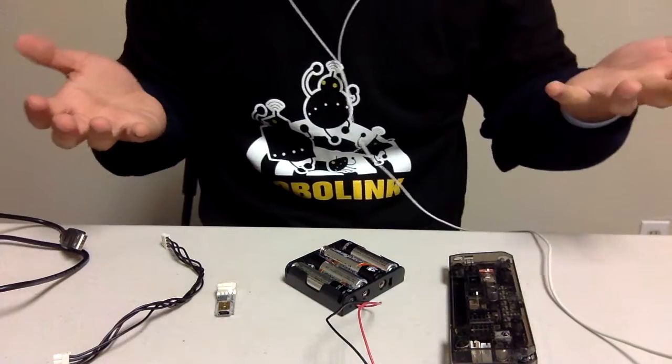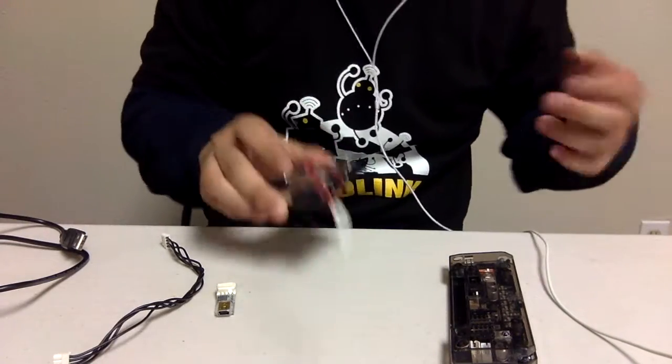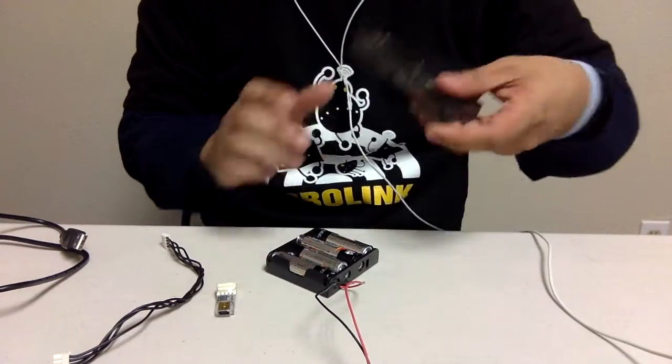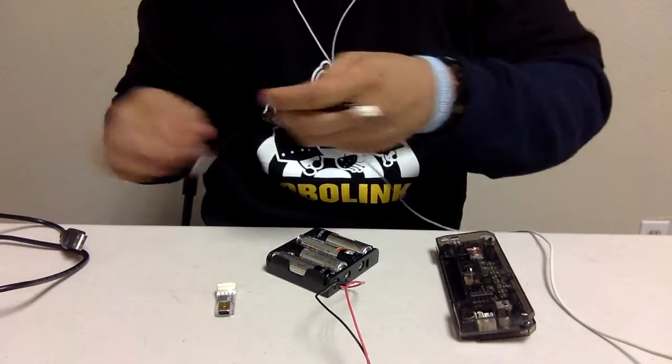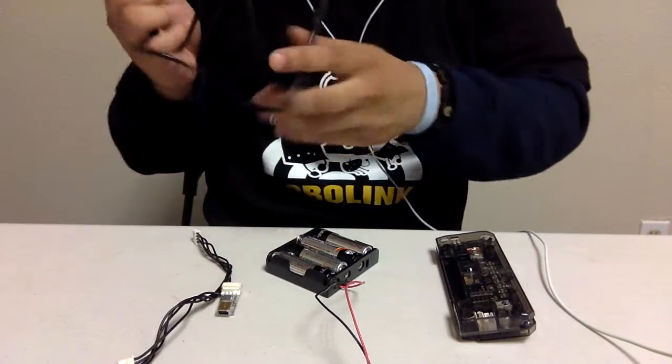So the first things that we need to have are the battery box, the inventor board, the cable, as well as the micro USB.